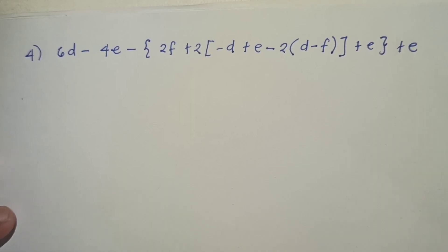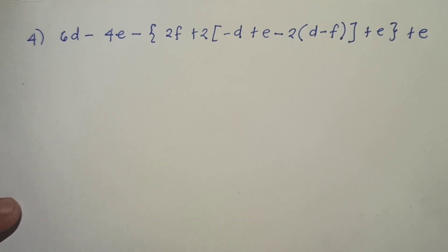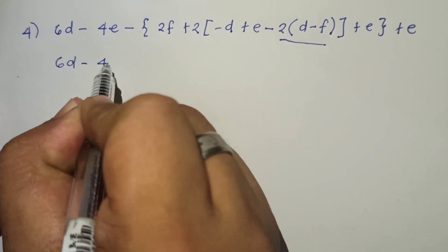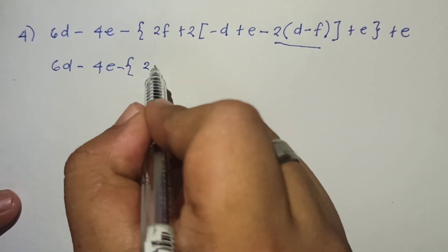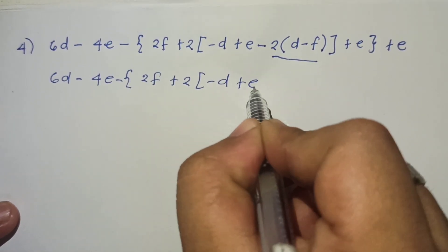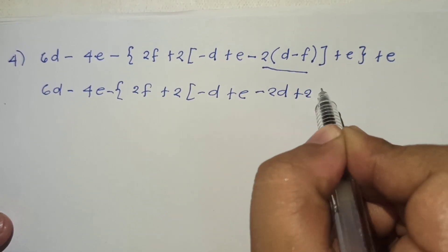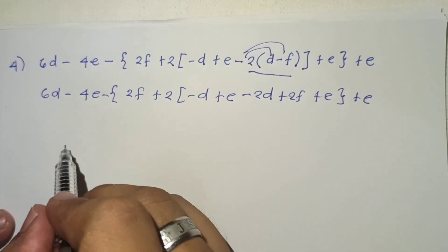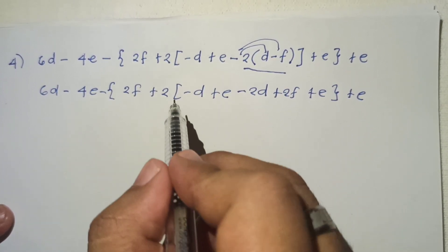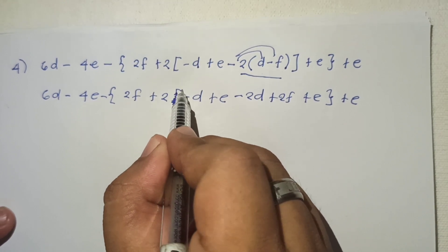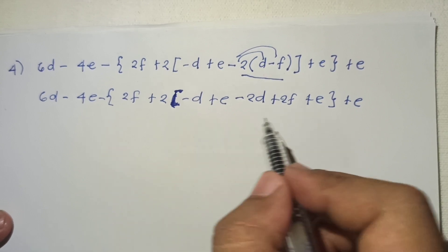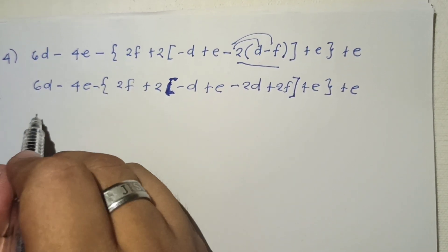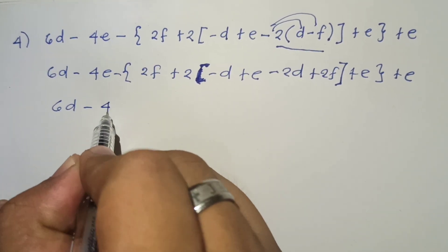We are now in number 4. We have to simplify this part first: 6d minus 4e, minus the quantity of 2f plus 2 minus d plus e minus 2d plus 2f. We have to distribute the sign — do not forget e plus e. Closing the bracket, we are going to distribute first the 2, so we have 6d minus 4e minus 2f.